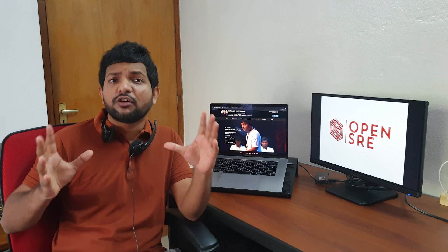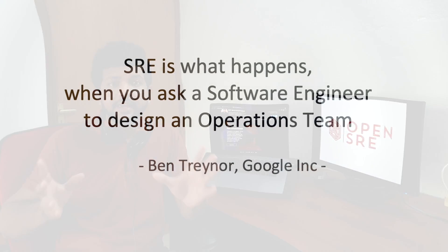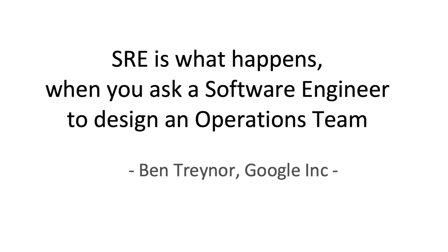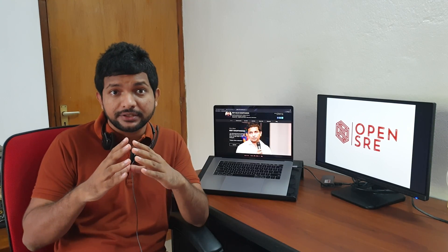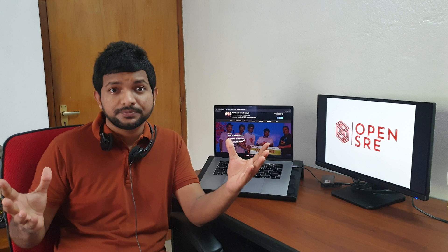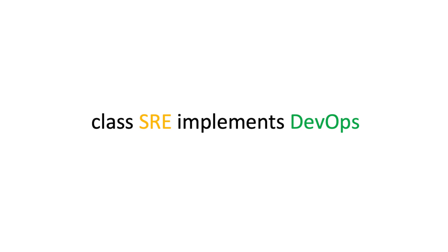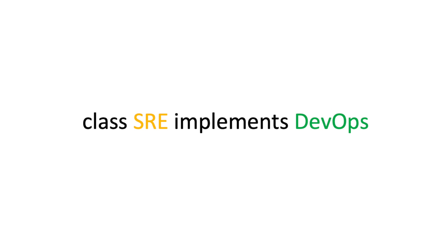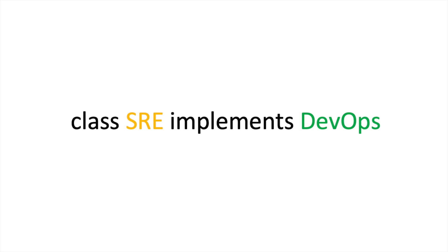Now that we understand what DevOps is, let's try and understand what SRE is. SRE is what happens when you ask a software engineer to implement an operations function from a software engineering perspective in your organization. In object-oriented terms, SRE implements DevOps. If we consider DevOps as an interface and SRE as a class, SRE will implement the interface called DevOps.